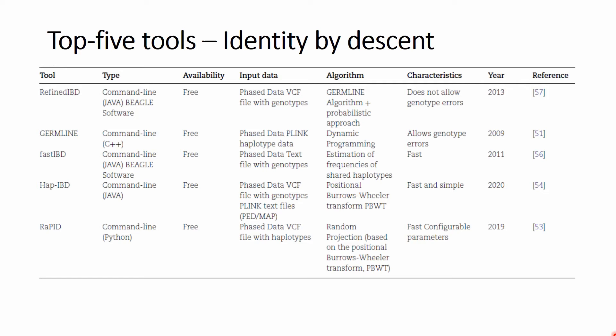Next we have the top five tools for identity by descent calculations. The top of the list is RefinedIBD, followed by GermLine, FastIBD, HubIBD, and ArrayPID. All of these tools are command line based and free to use. Worth noting is that RefinedIBD does not allow genotype errors, so it should be used together with an imputation process. The authors of RefinedIBD are the same ones who made Beagle, which is used for imputation, so you can very well combine Beagle for imputation followed by RefinedIBD for identity by descent calculation.